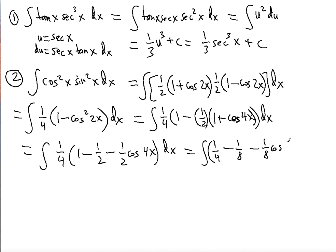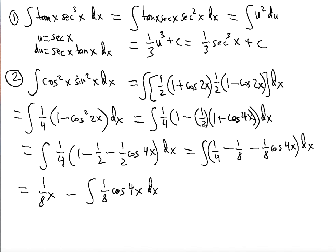One-quarter minus one-eighth is one-eighth precisely, so the first term gives one-eighth x as its antiderivative. For the cosine term, we use u-substitution: let u equal 4x, so du equals 4 dx, meaning we multiply the integral by one-fourth to compensate. This gives one-eighth x minus one-fourth times one-eighth times the integral of cosine u du.